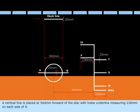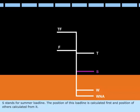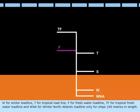S stands for summer load line. The position of this load line is calculated first and position of others calculated from it. W for winter load line, T for tropical load line, F for freshwater load line, TF for tropical freshwater load line, and WNA for winter North Atlantic load line, only for ships 100 meters in length.